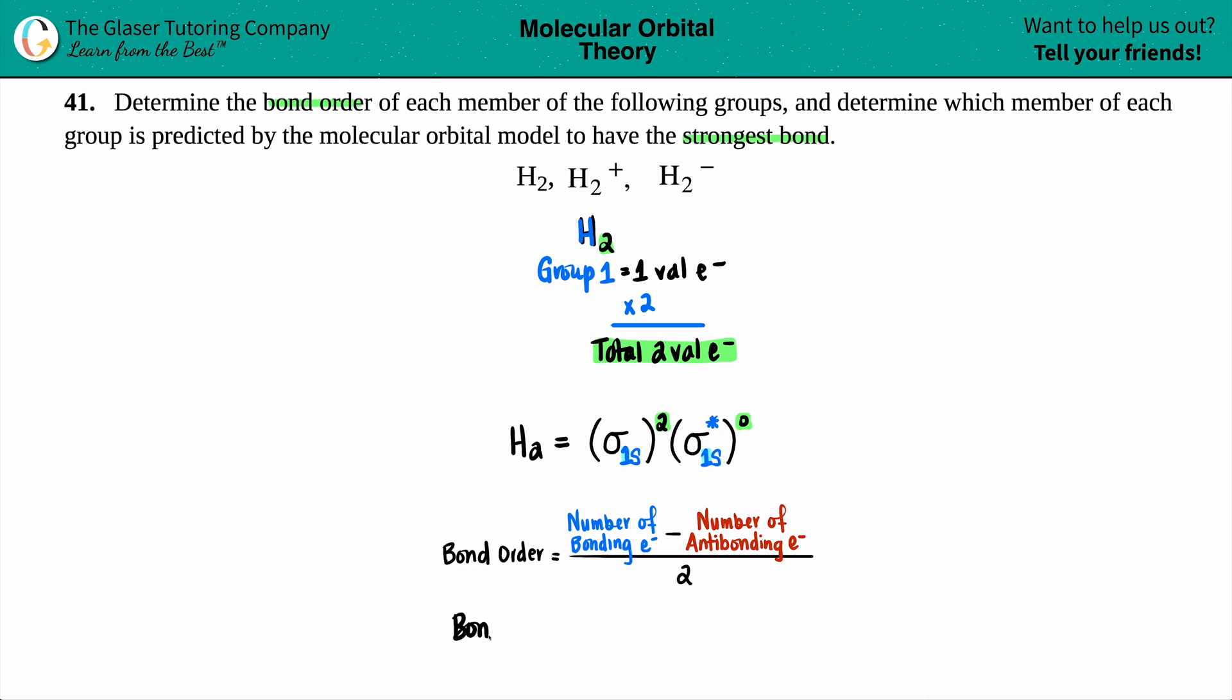So in our case, the bond order would be something minus something divided by two. Just look at the ones that have stars and don't have stars. This molecular orbital does not have a star next to it. So that's a bonding orbital. Those are your bonding electrons. The antibonding ones are the ones that have the stars next to it, like this one.